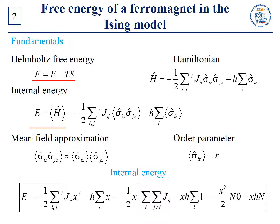Taking into account that the Hamiltonian in the Ising model has the following form, the internal energy can be written as follows. Considering the mean-field approximation, we can rewrite the mean of the product as the product of the means. Taking into account the designation of the order parameter, we obtain the following expression for the internal energy.